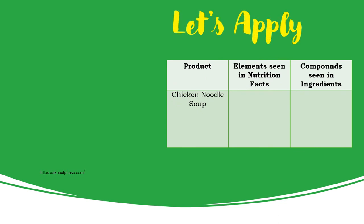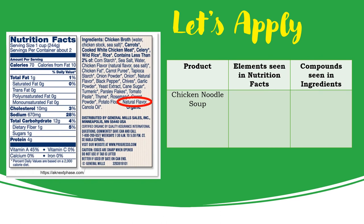Let's apply: complete the table by filling in the elements found in the nutrition facts and the compounds found in the ingredients. In the nutrition facts, the elements are calcium (0%) and iron (0%). In the ingredients, the compounds I found are salt and water.